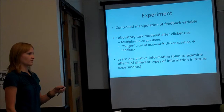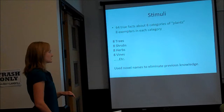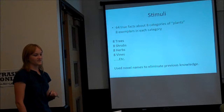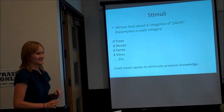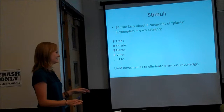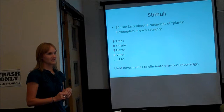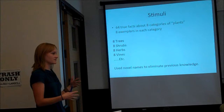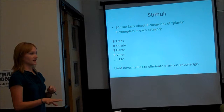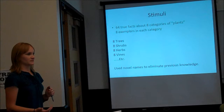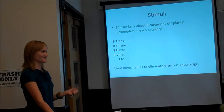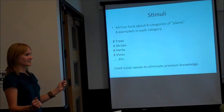They are learning factual information here. What they were learning was 64 true facts about eight categories of plants—plants in quotes because some categories technically may not be plants, like fungi. There are eight exemplars in each category; for example, they learned about eight trees, eight shrubs, et cetera, and they learned a piece of information about each exemplar. These are true facts but we used novel names to eliminate for prior knowledge—the names were put through a slicer and dicer so they'd sound like members of that plant category.